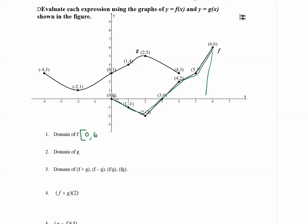So the domain of f is [0, 6] with brackets. We use brackets because the endpoints are included in the domain with the closed-in dots.